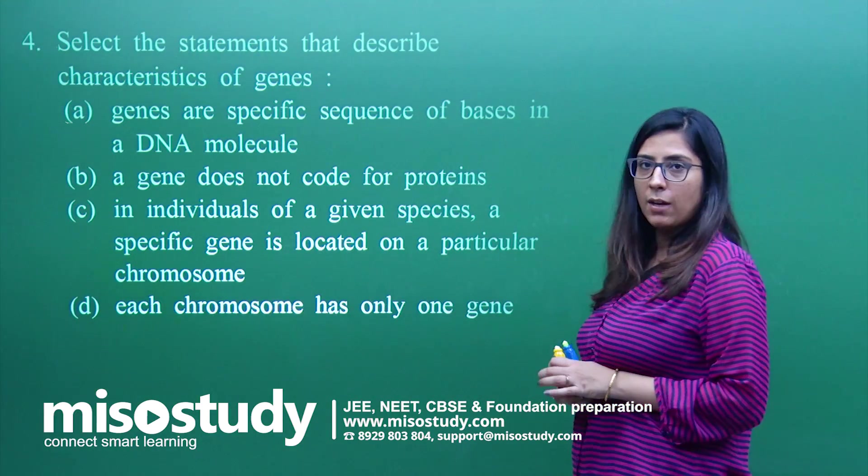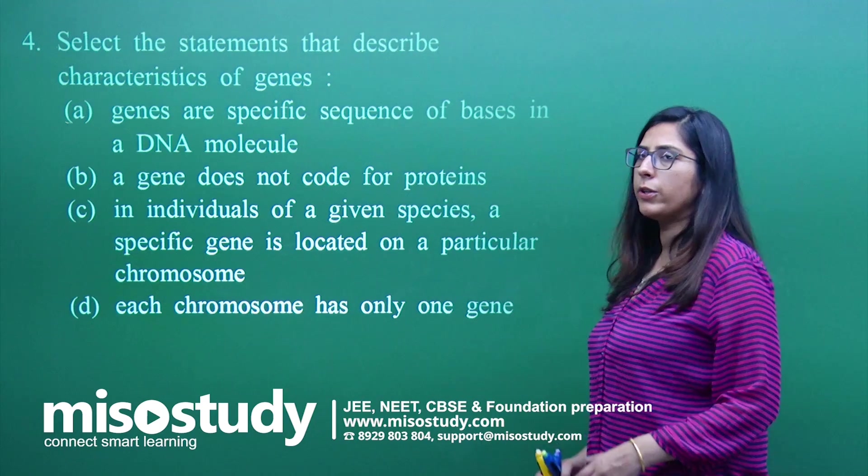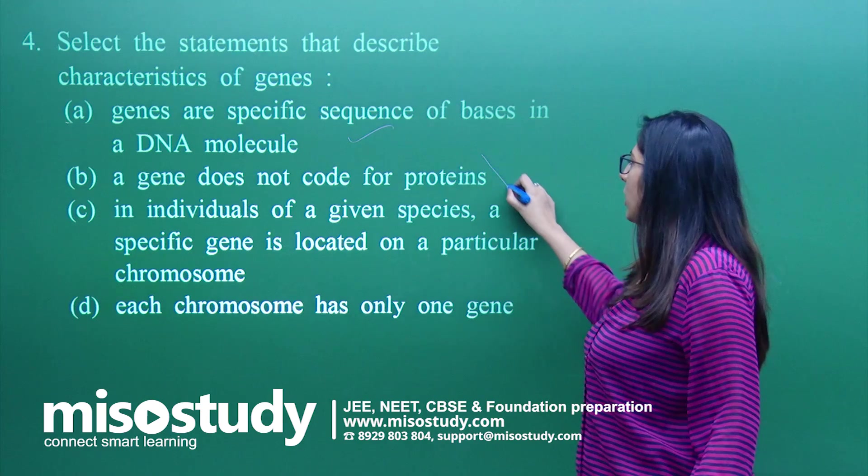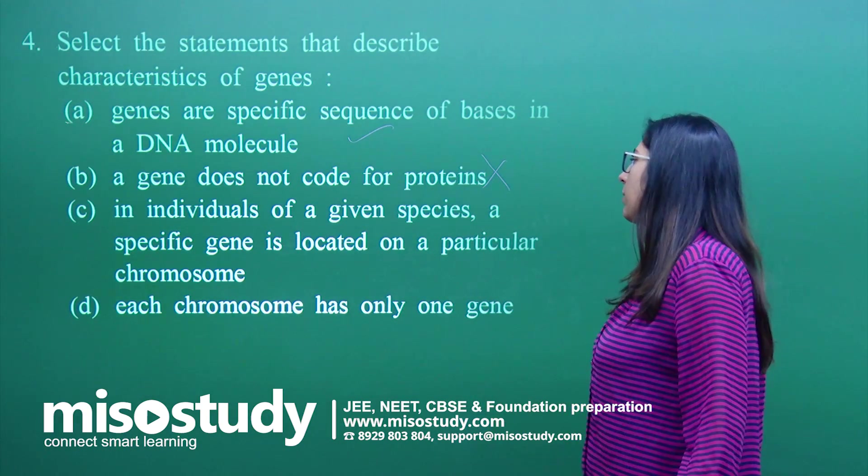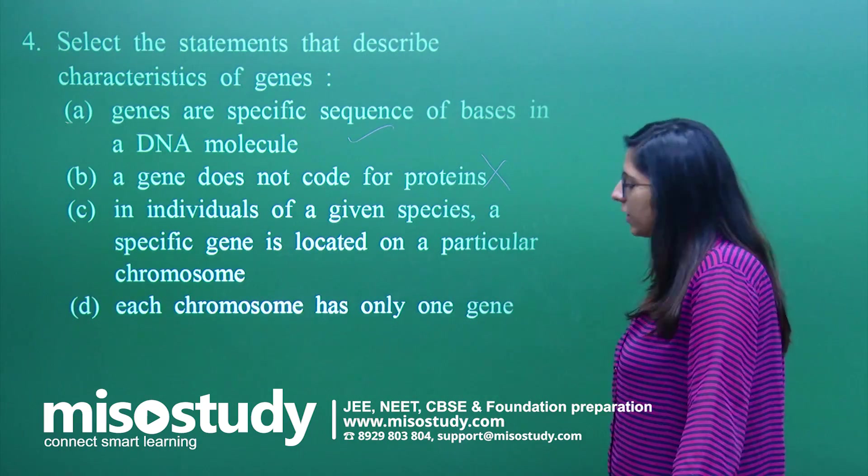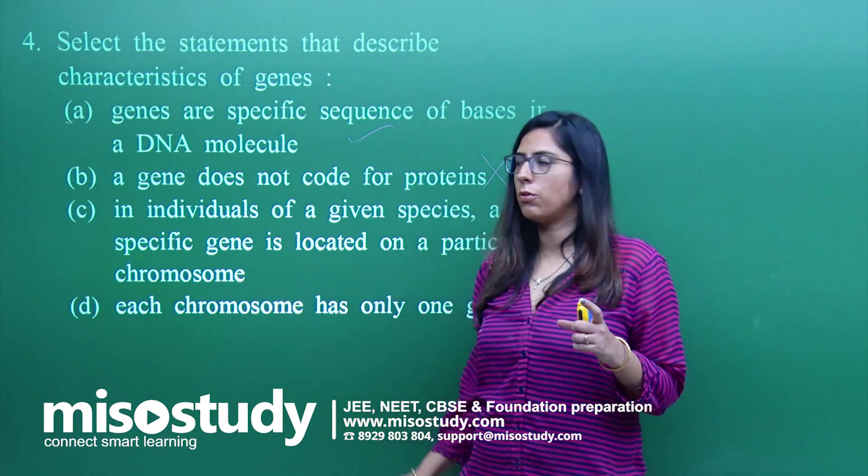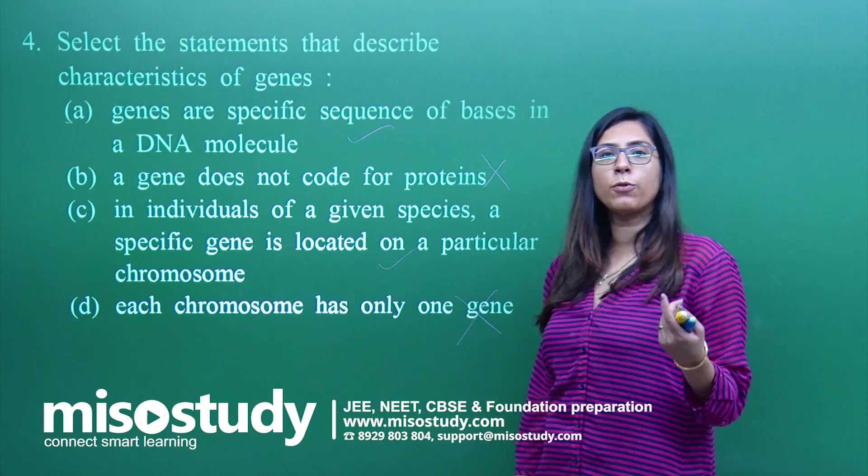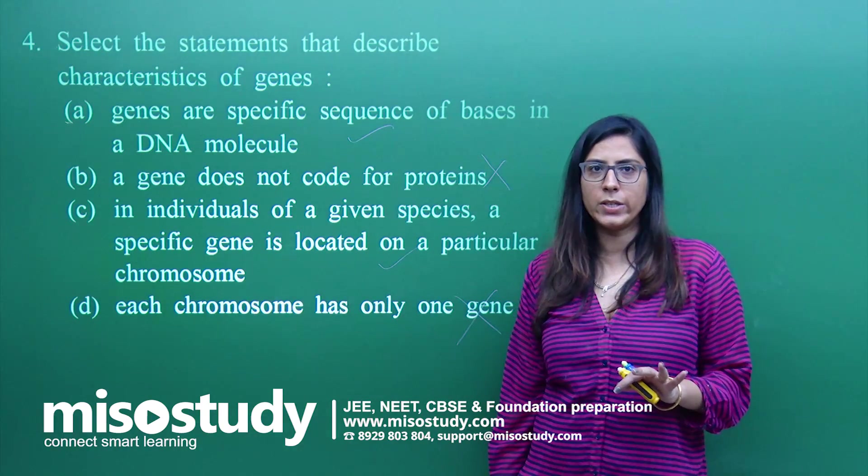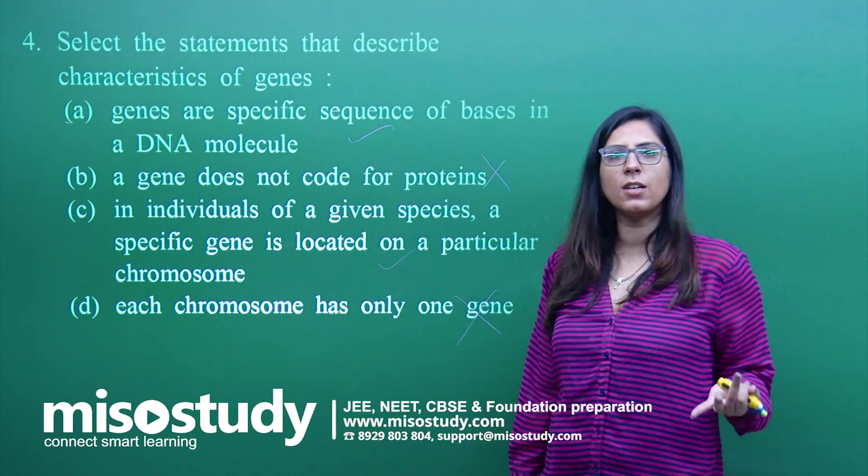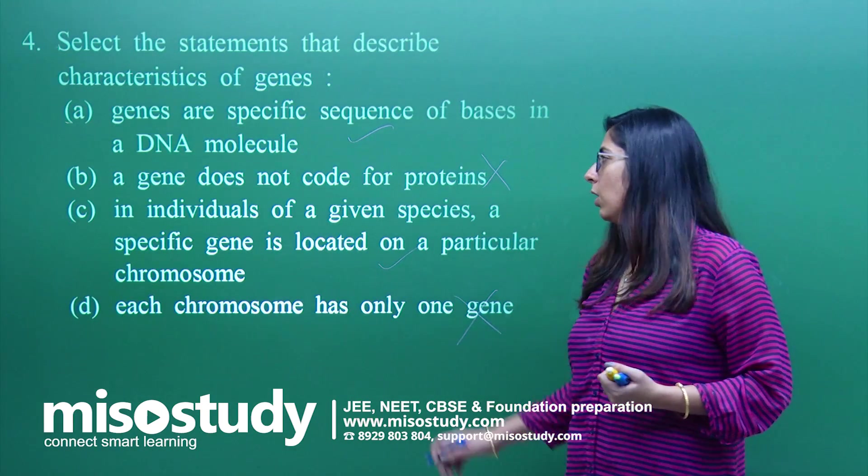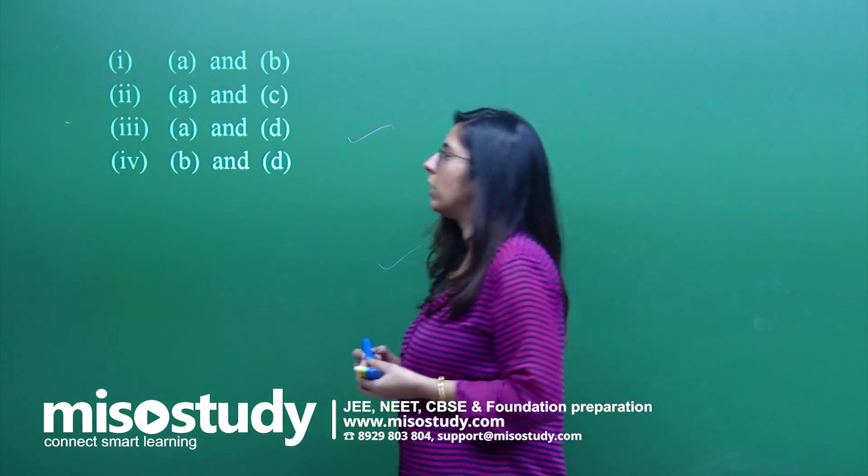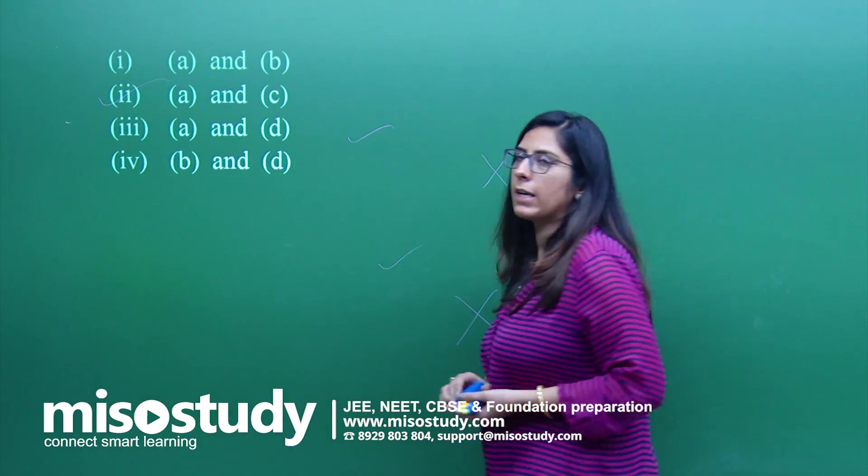Question number 4. Select the statement that describes the characteristic of a gene. Genes are specific sequences of bases in a DNA molecule - right, absolutely right. A gene does not code for protein - no, genes code for protein. An individual of a given species, a specific gene is located on a particular chromosome - yes, this is also specified. Each chromosome has only a single gene - no, multiple genes are present. Otherwise, 23 pairs means only 23 genes are present? No, many genes are present. So both statements A and C are correct. I will go for the second option, A and C.